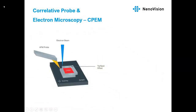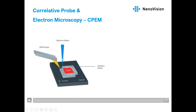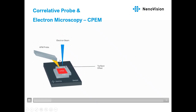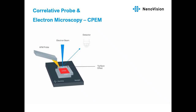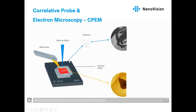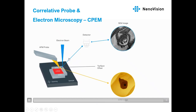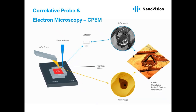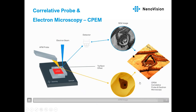In the CPAM — correlative probe and electron microscopy — technology, the electron beam points very close to the AFM tip with a constant offset during scanning. The AFM tip and electron beam remain static, and the sample is scanned only by LightScope's scanners underneath. This enables simultaneous detection and acquisition of AFM and SEM signals at the same time, in the same place, and under the same conditions.